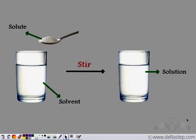When we dissolve a solute in a solvent — for example, if we add salt to water — salt is the solute, water is the solvent, and we stir it to get the final solution.